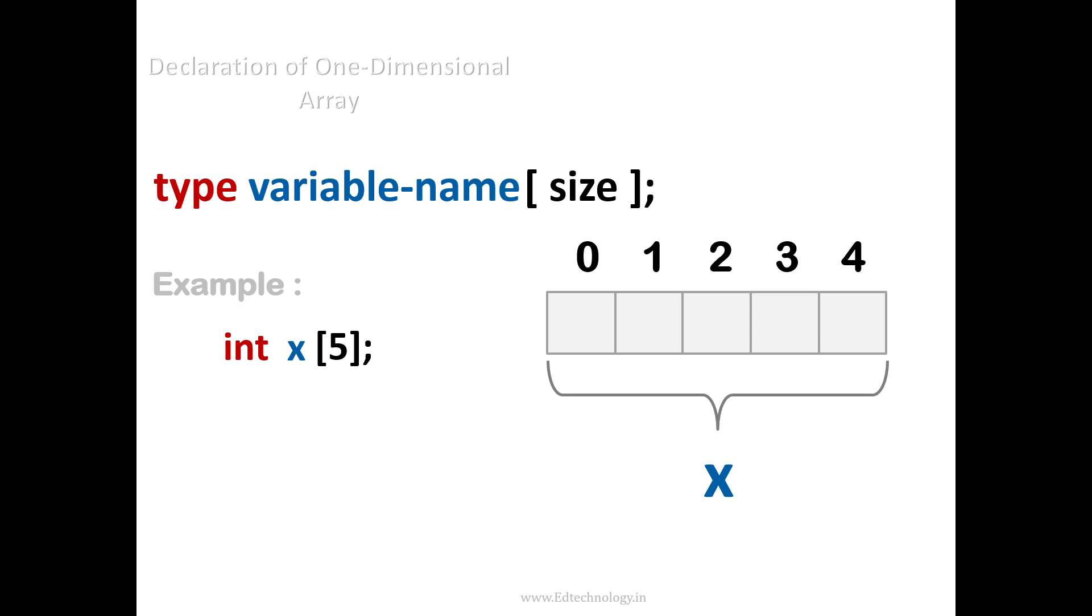This is how you can use the different data types to declare different array and different size. So we have here float height, we have char name. Char name array is nothing but the strings, but furthermore on the strings will be seeing in the future videos.